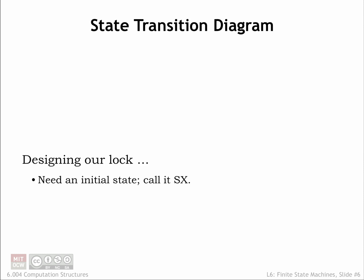We'll describe the operation of the FSM for our combination lock using a state transition diagram. Initially, the FSM has received no bits of the combination, a state we'll call SX.